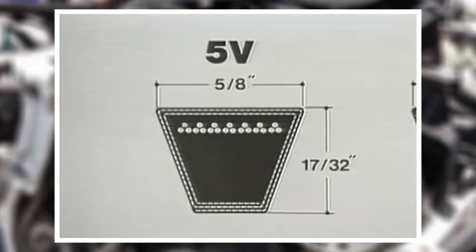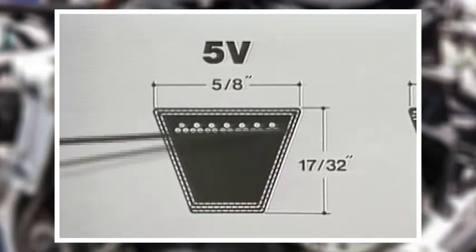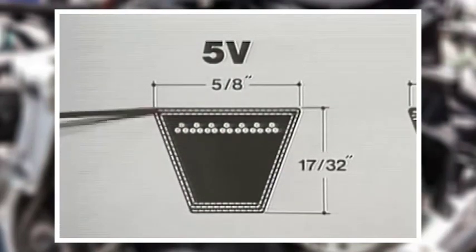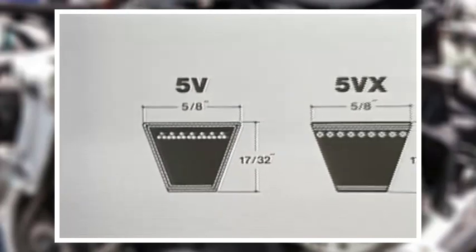Both conventional and narrow belts have an outer jacket made of rubberized cotton or man-made fibers. This jacket helps protect the belt from abrasion and from occasional contact with oil.